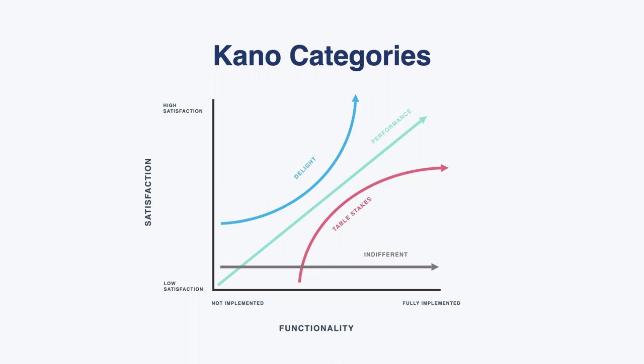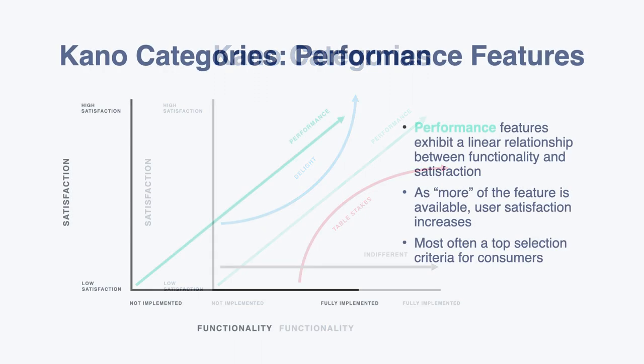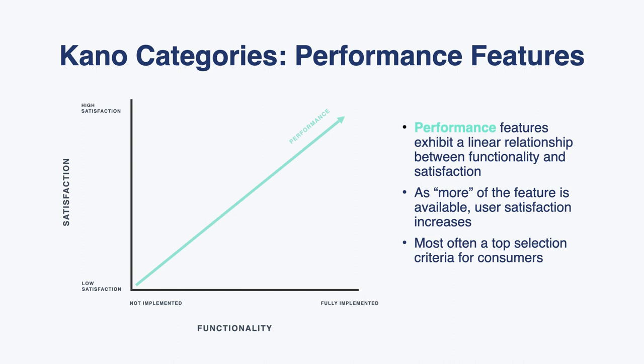Plotting these two axes together is where we get the magic of the Kano method. On the vertical axis it's user satisfaction; on the horizontal it's functionality or depth of implementation. The Kano method tries to categorize features based on where they are plotted across those two axes. To start with, we have performance features — these have a really linear relationship between functionality and satisfaction: as you implement more, satisfaction increases.